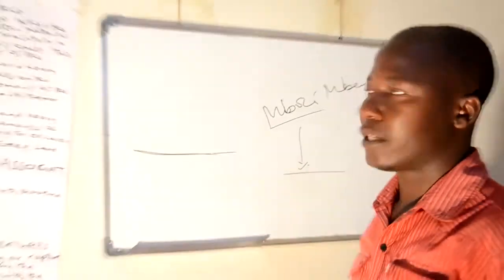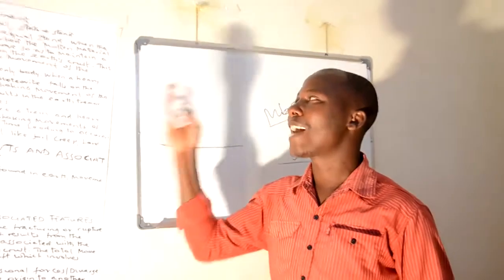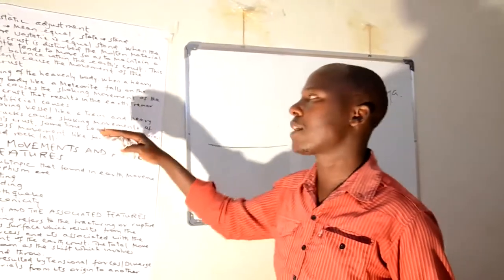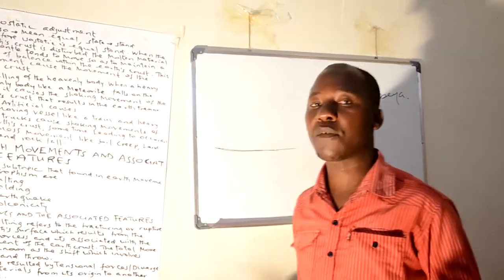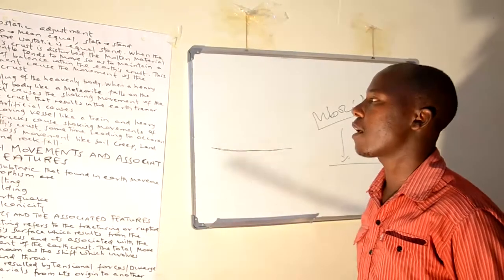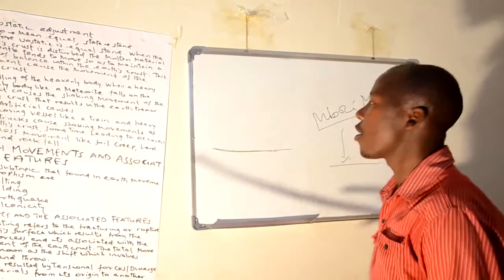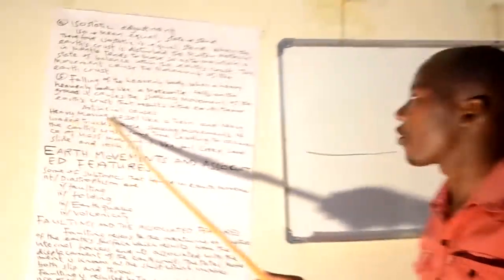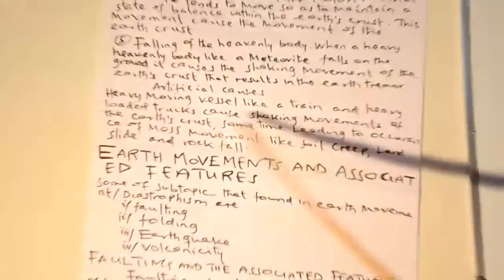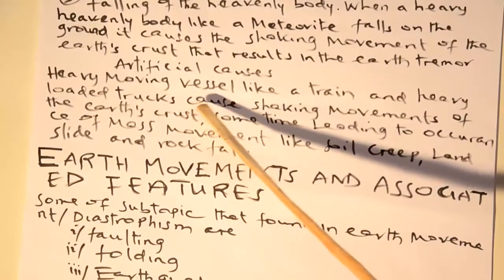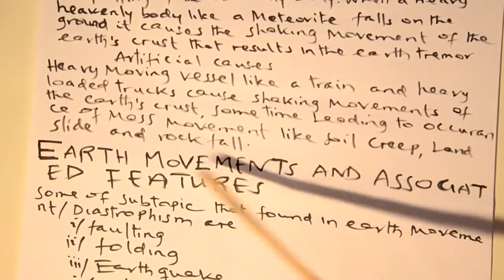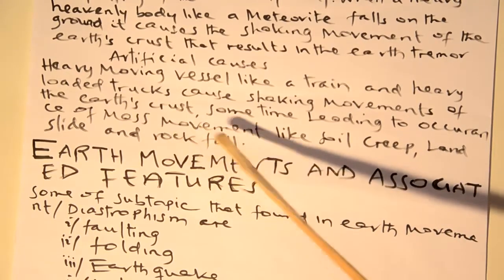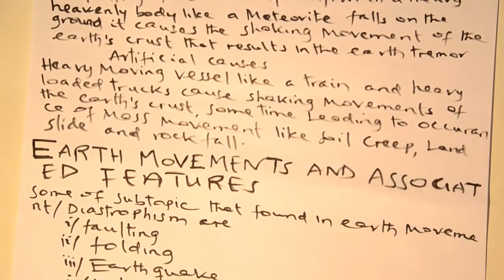Dear students, that was the natural cause, but we have to describe the other which is artificial. Whenever we talk about artificial, we are talking about things caused by human beings. For instance, heavy movement of vessels like trains and heavy loaded trucks cause the shaking of the earth's crust, sometimes leading to the occurrence of mass wasting like soil creep or landslide.